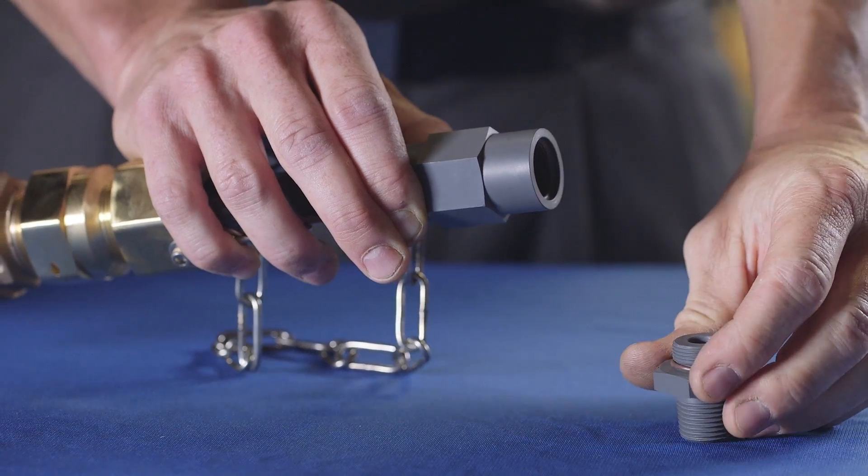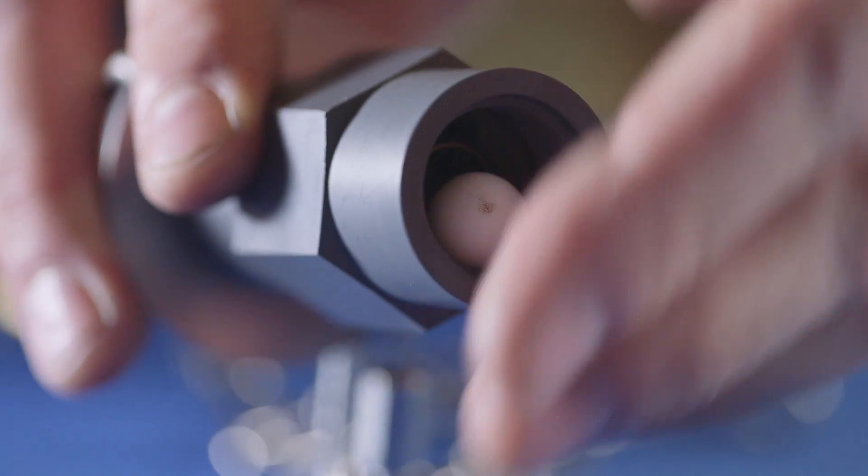Place the upper housing aside and remove the O-ring, ball, and spring from the lower housing.